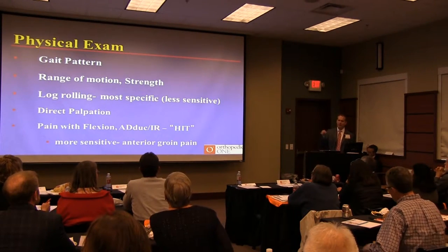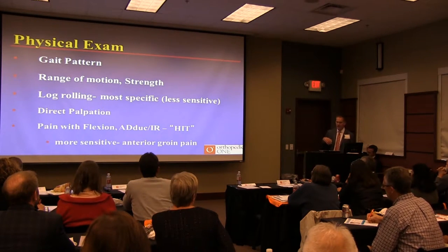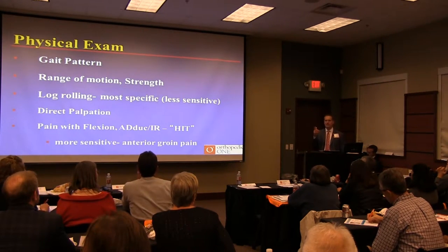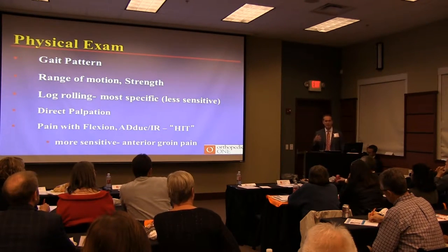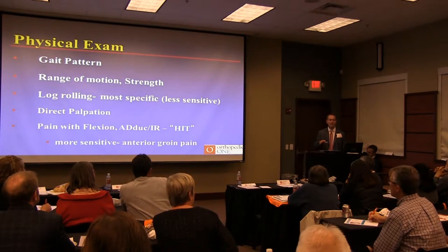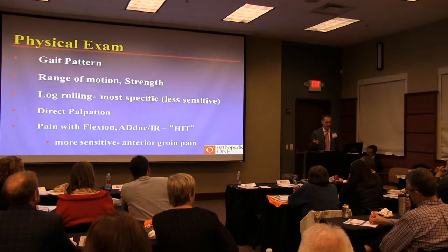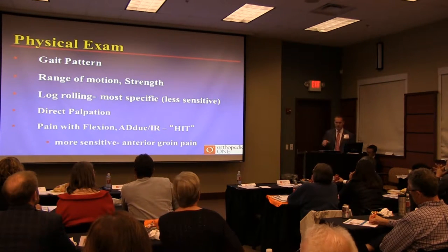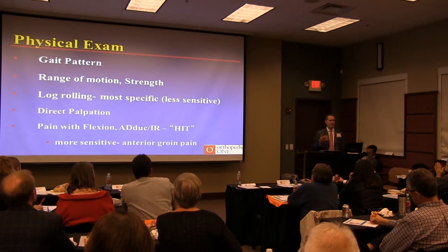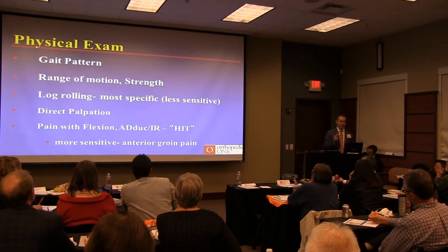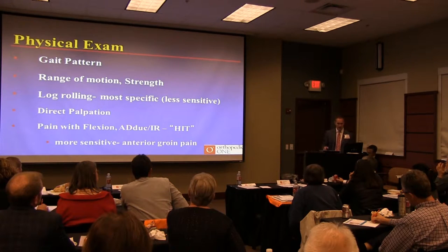What's their range of motion compared to both sides, just like the shoulder? What's their strength? Log rolling — if you just log roll the hip, I had a 72-year-old who fell, went to urgent care, X-rays were negative, she couldn't bear weight. A simple log roll caused a terrible amount of pain. MRI showed a greater trochanteric fracture. If log rolling hurts, it's something more significant. X-rays being negative doesn't rule out a hip fracture, particularly in an elderly person.